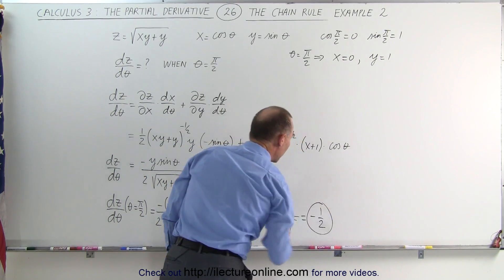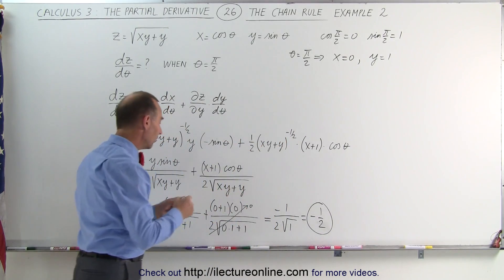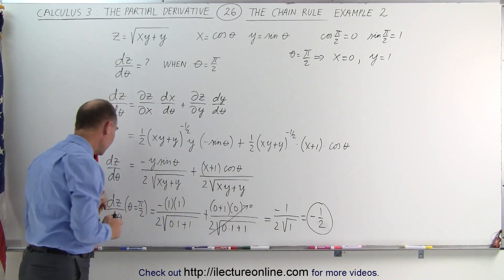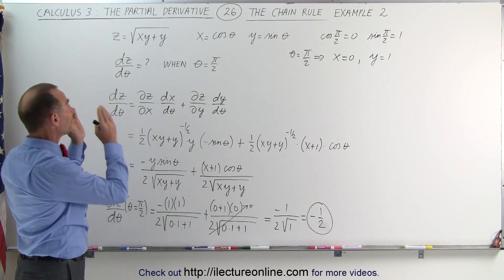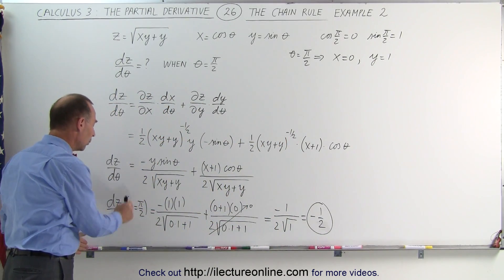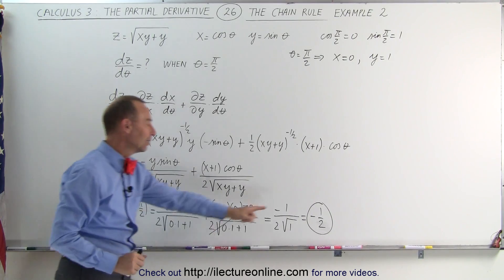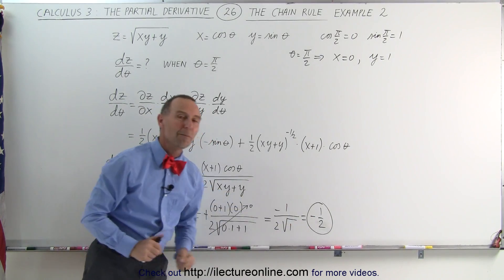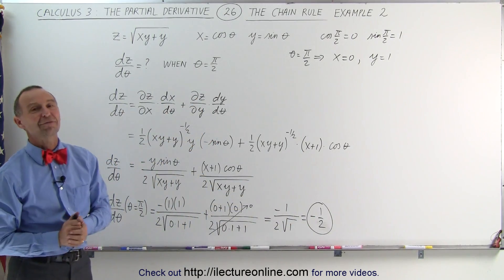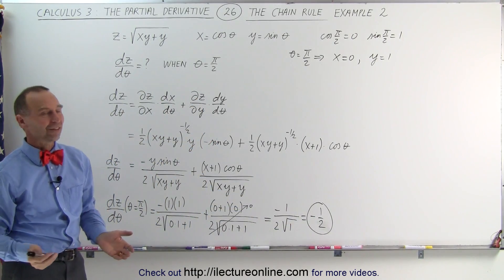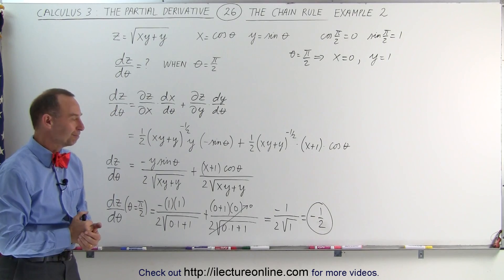There we go. Which means that the derivative of the function z with respect to theta, when theta is equal to pi over 2, is equal to negative 1/2. And that's how it's done.